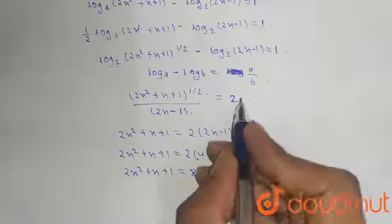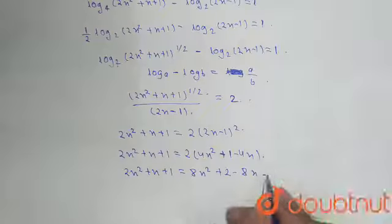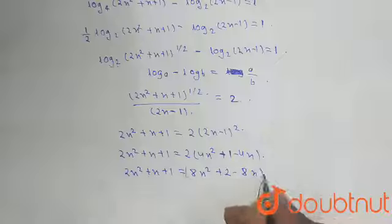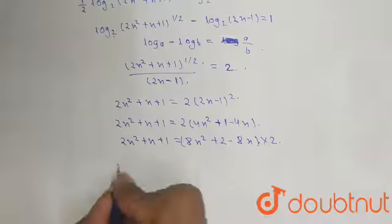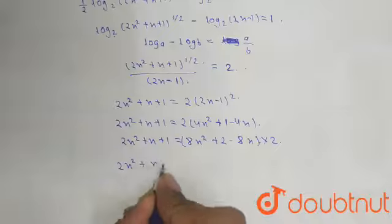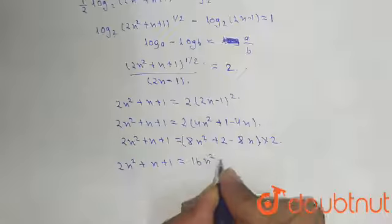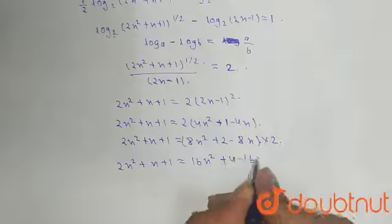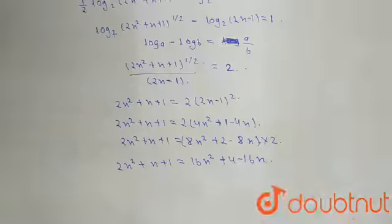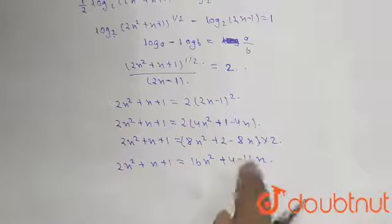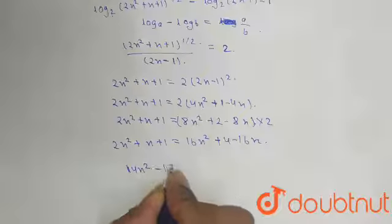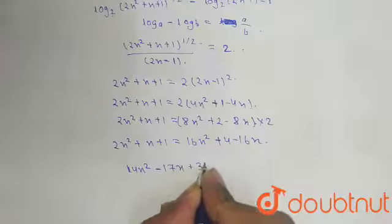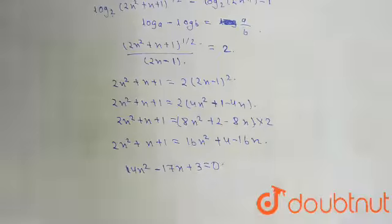When squaring both sides, the 2 becomes 4, so we multiply the whole equation by 2 again. This gives 2x² + x + 1 equals 16x² + 4 - 16x. Rearranging, our equation becomes 14x² - 17x + 3 equals 0.